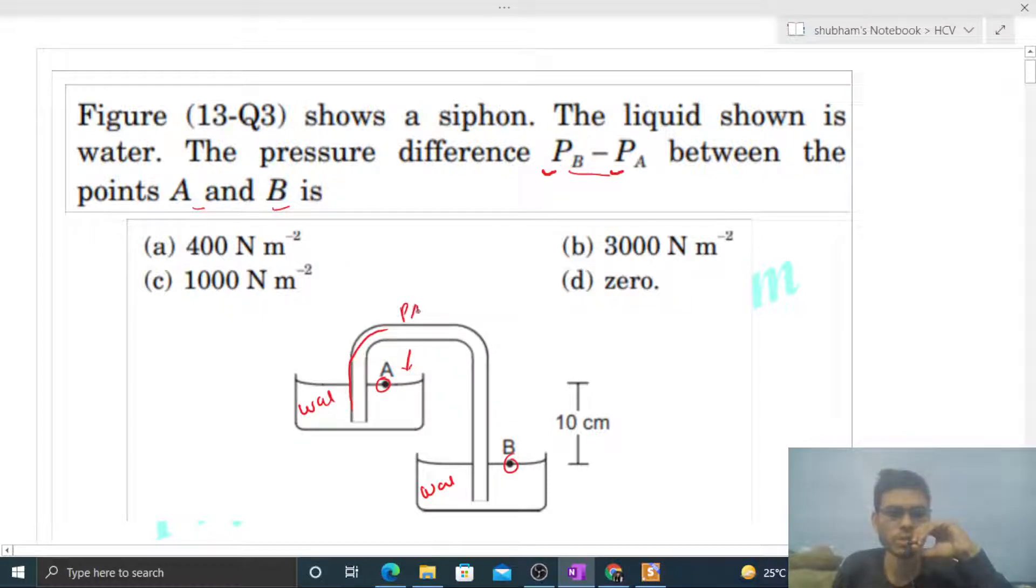Now point A, what will be the pressure? Simply atmospheric pressure, because point A is on the surface of the liquid. Similarly point B is also on the liquid's surface, so at point B what will be the pressure? Atmospheric pressure, right. So point A has